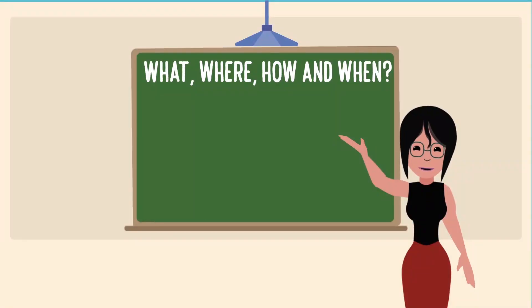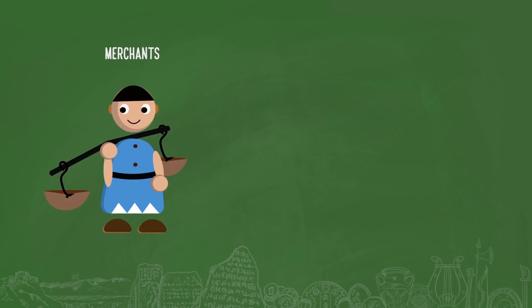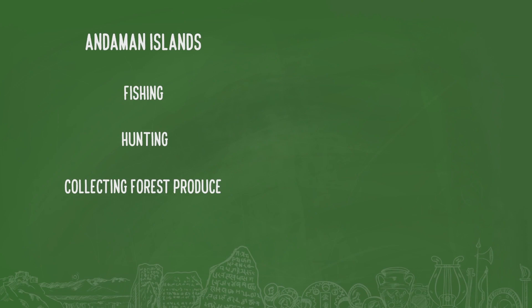The past was different for different groups of people. For example, the life of herders or farmers was quite different from the life of kings and queens. Similarly, life of merchants was different from that of craftspersons. This is true even today. People follow different practices and customs in different parts of the country. For example, most people living in Andaman Islands get their own food by fishing, hunting and collecting forest produce. On the contrary, people who live in cities depend on others for their food supplies.